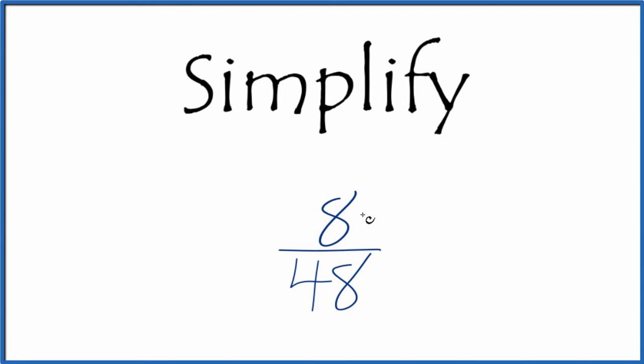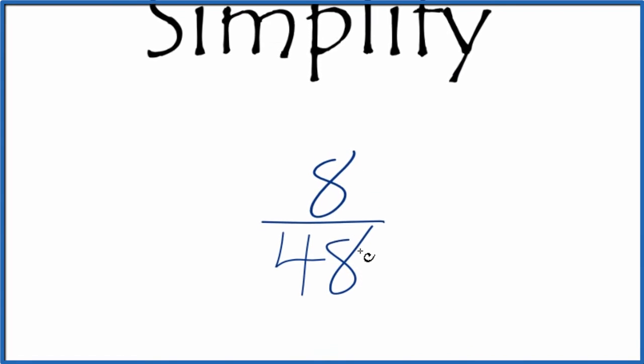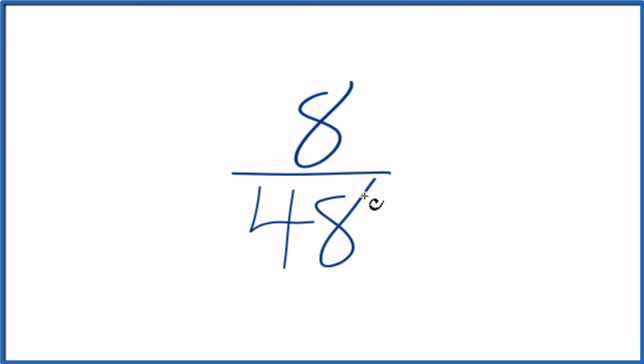We want to find another fraction that has the same value as 8 over 48. We call that equivalent fraction, but we want it to be in lowest terms. And to do that, what we need to do is find a common factor, something that goes into both 8 and 48.